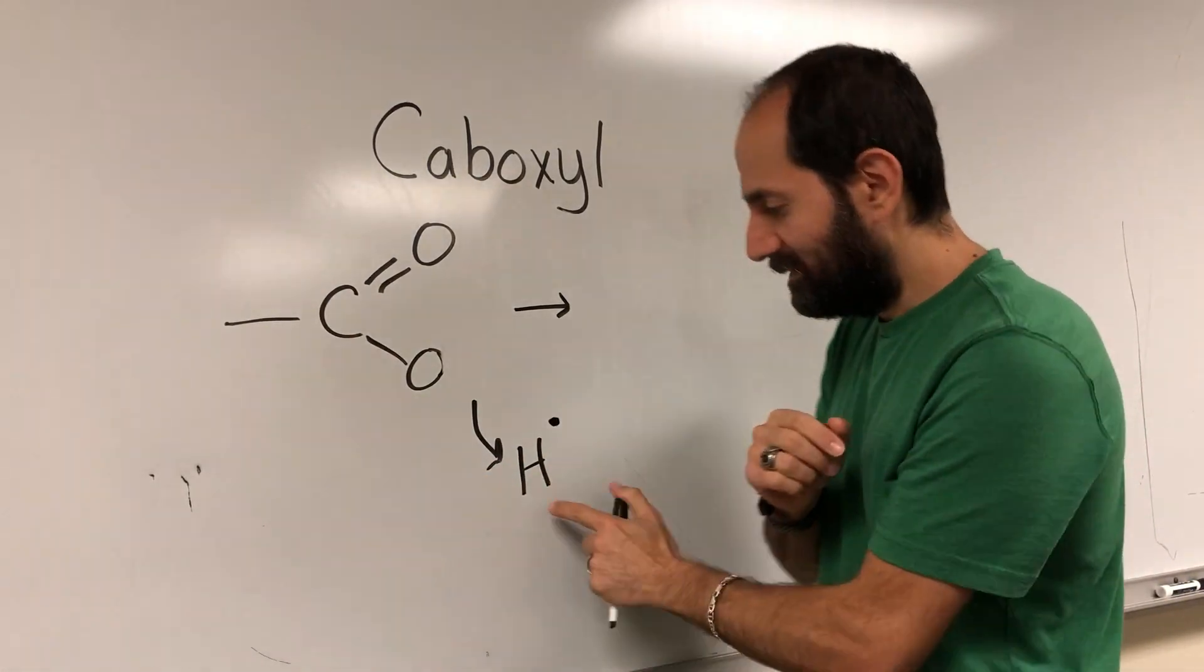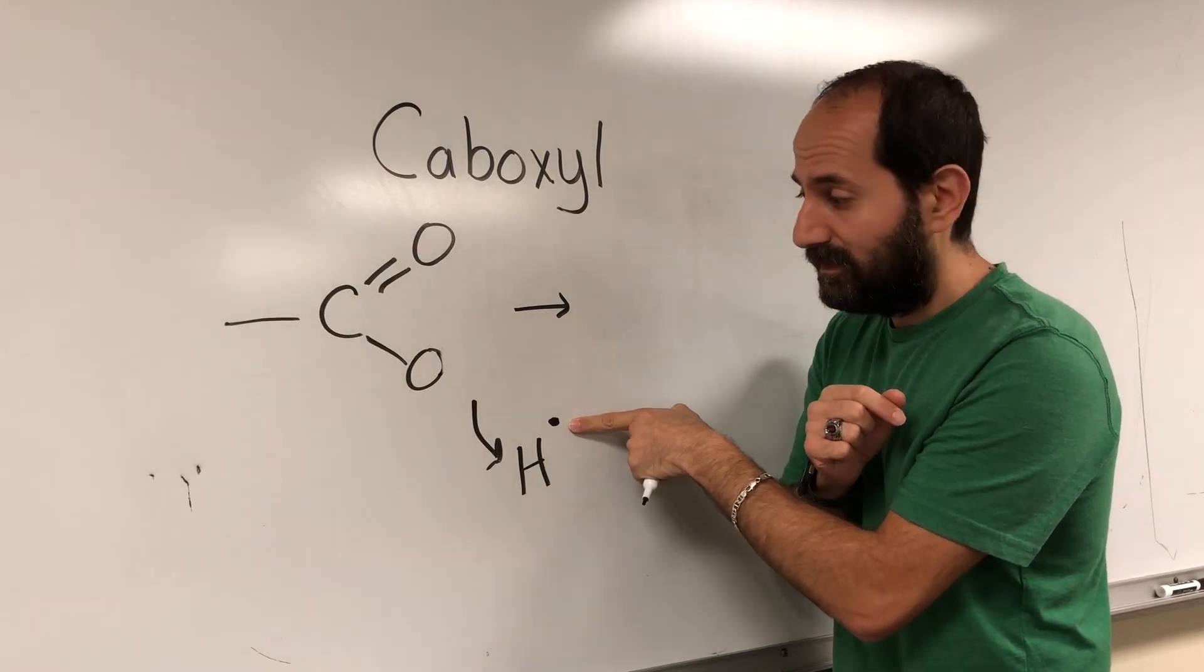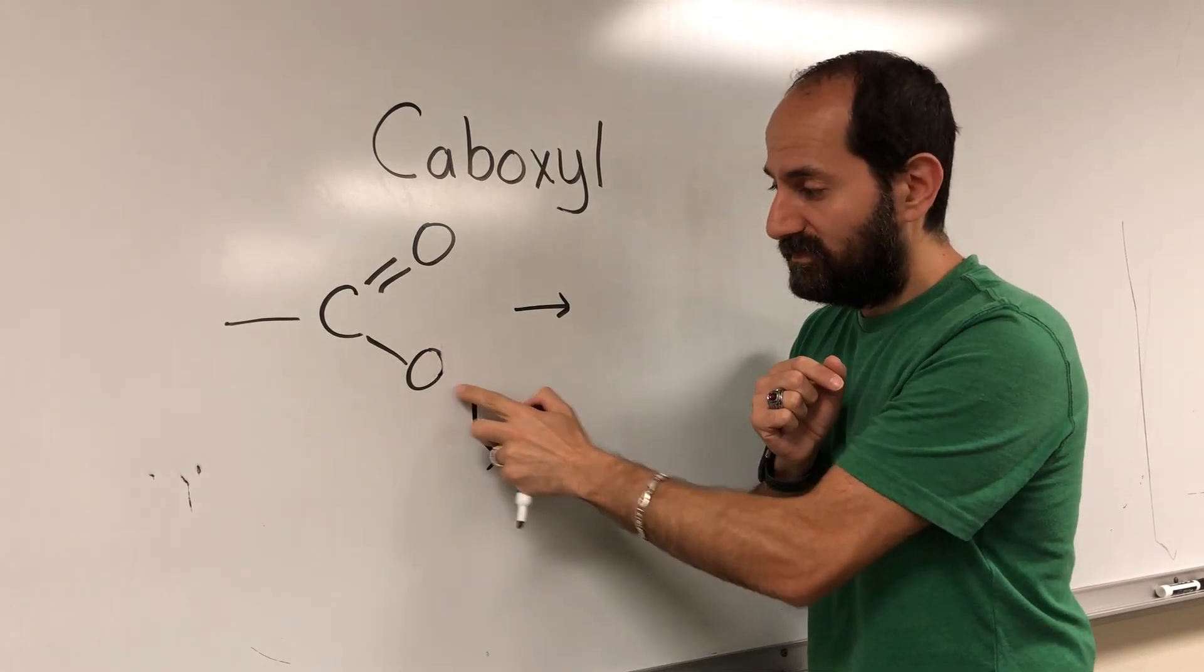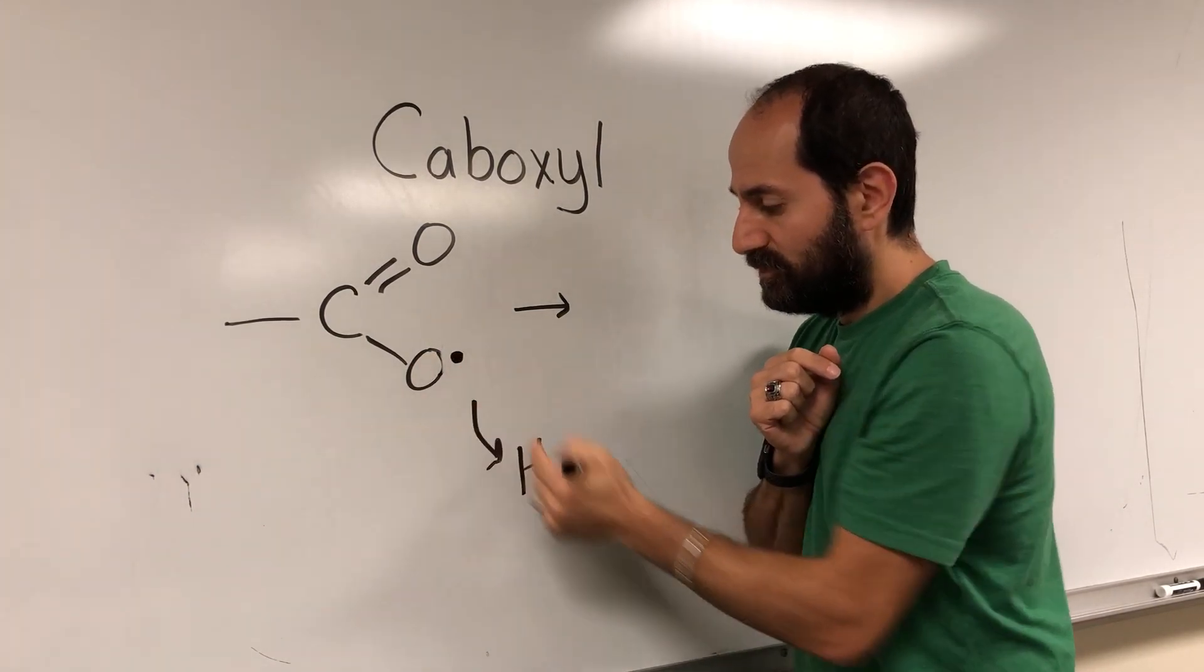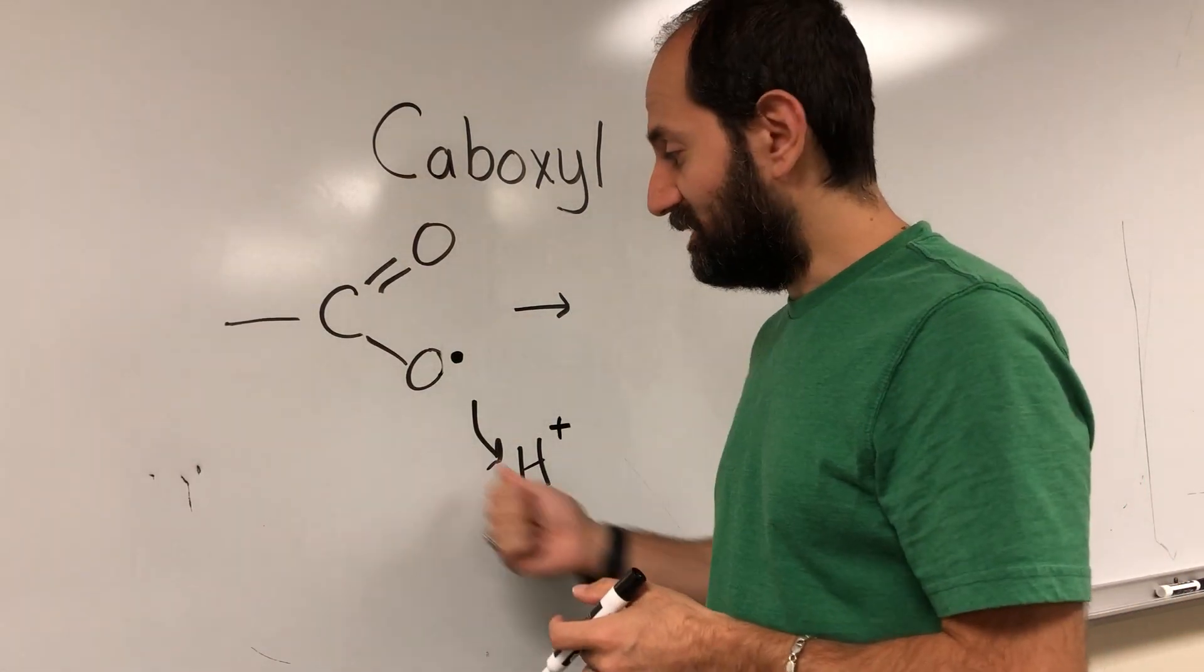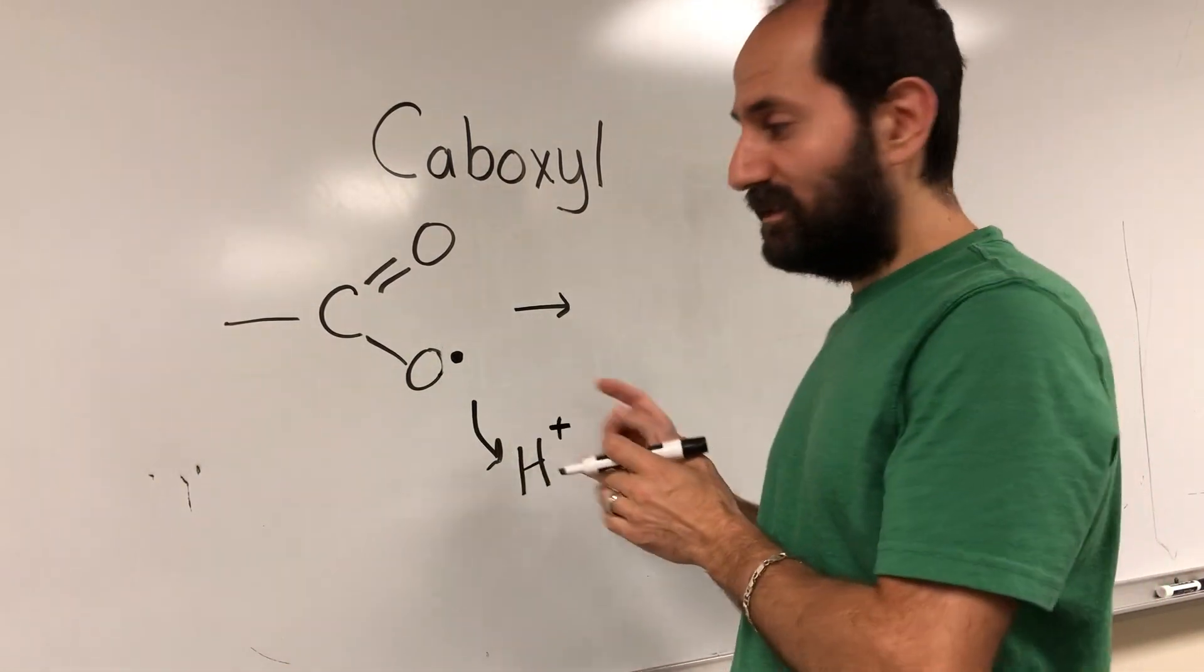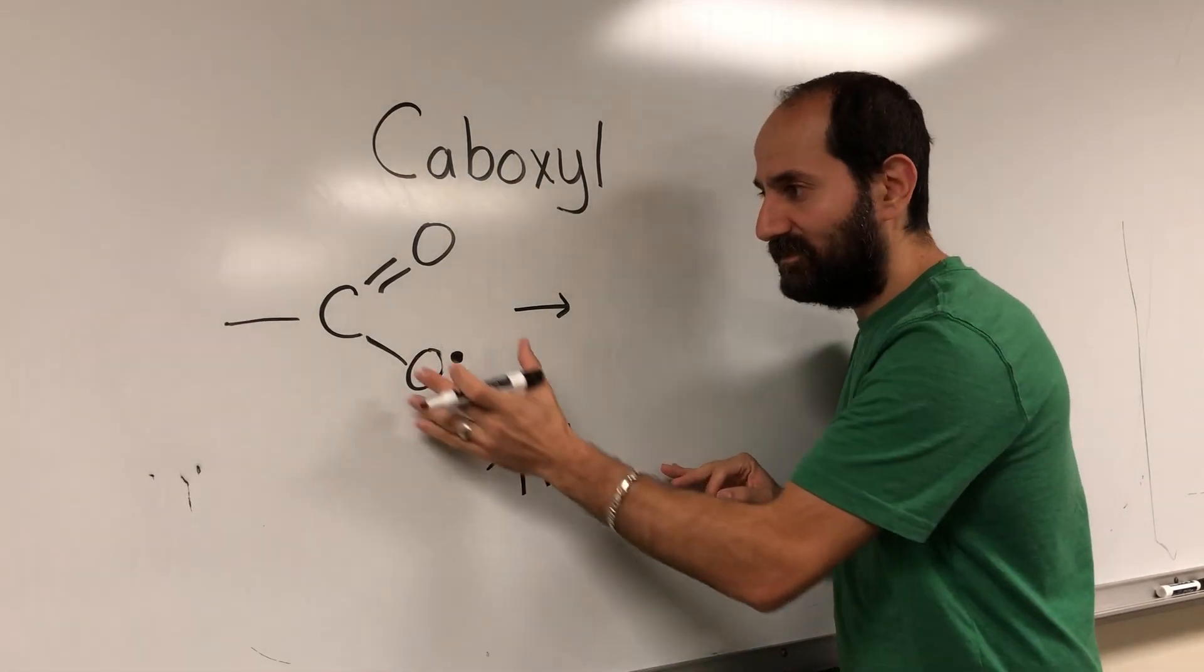But not the whole hydrogen leaves. Remember, hydrogen is a proton with an electron. That dot is its electron. The carboxyl group is not losing a hydrogen, it is losing just the proton. Does that make sense? So it's H+, the proton is leaving, not the whole hydrogen.